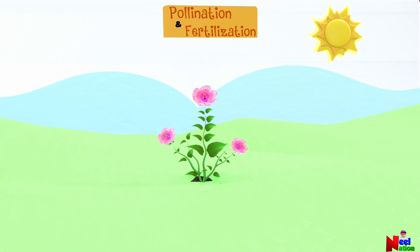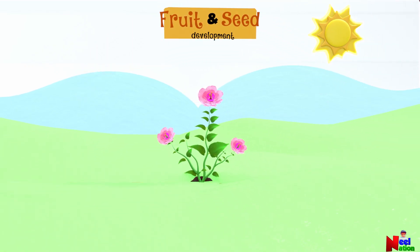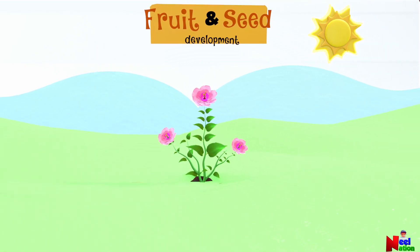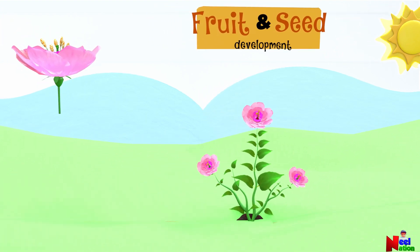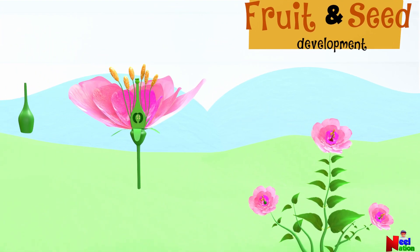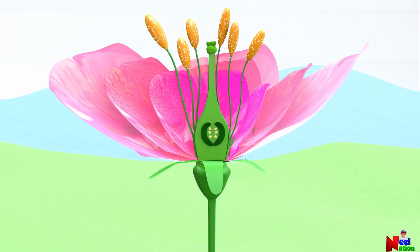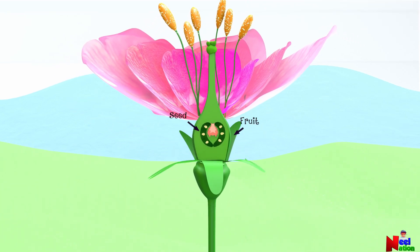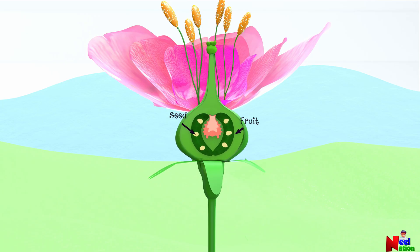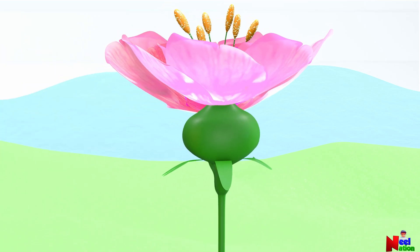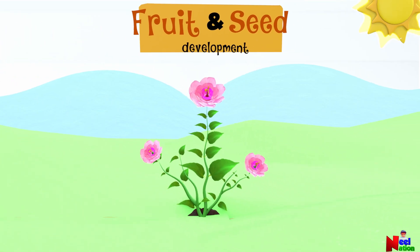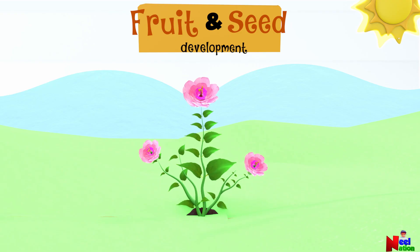The next stage of the plant's life cycle after fertilization is typically the development of seeds and the transformation of the ovary into a fruit. The ovule turns into a seed, and the ovary may become a fruit, protecting the new seeds inside. It's like a celebration for making baby seeds — this is fruit and seed formation.